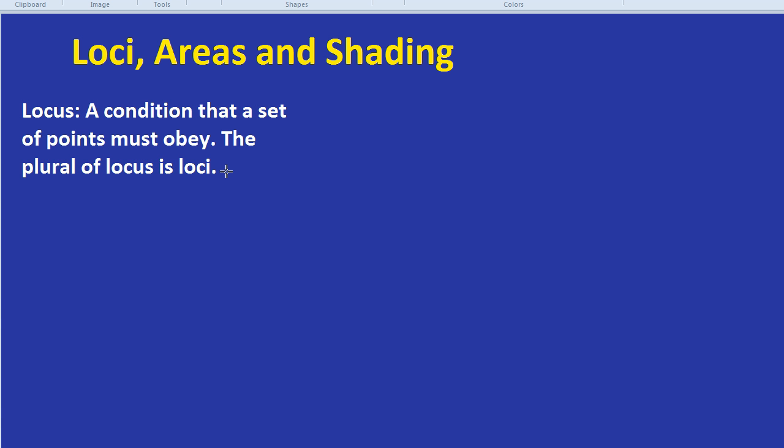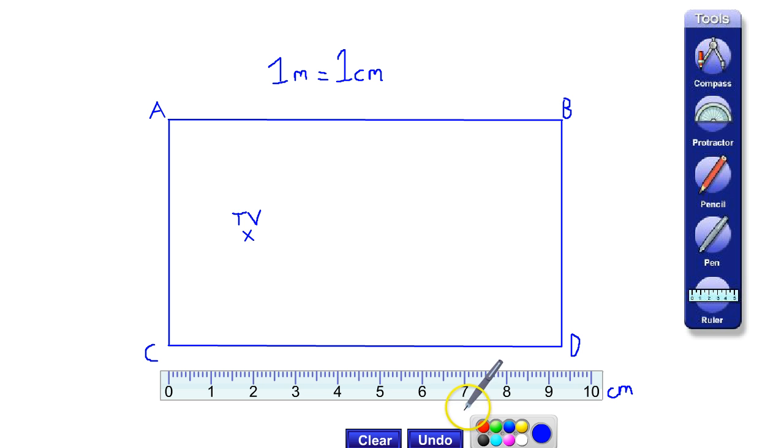You may remember those types of questions where it's like shading the region which is at least two centimetres away from a certain point, or closer to a certain line than to another line — well, those are loci questions. In this video, we're going to do an example of a loci question using some super cool software from eMaths.